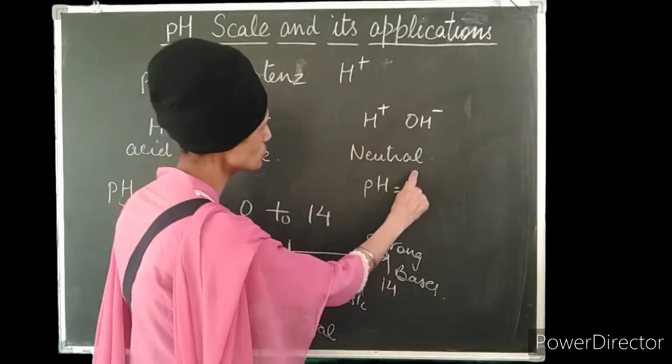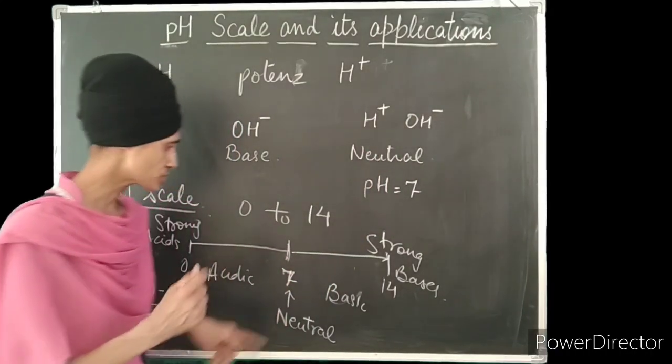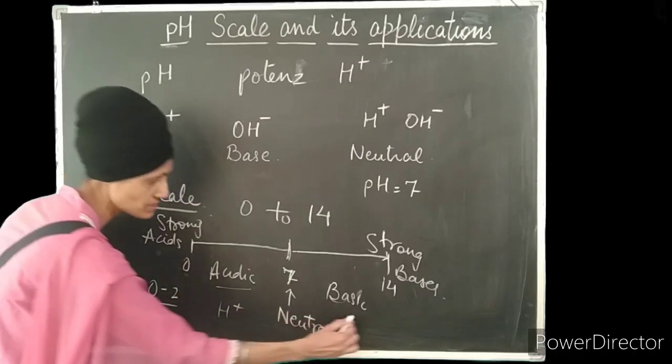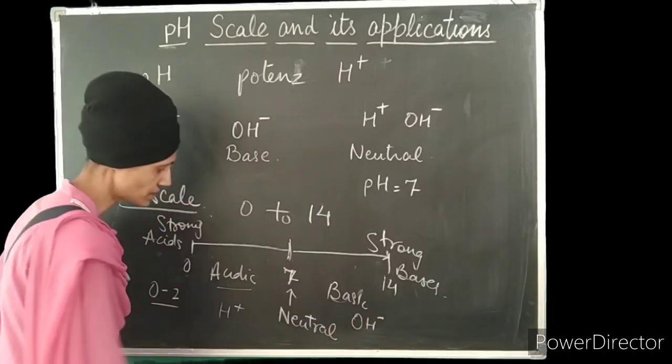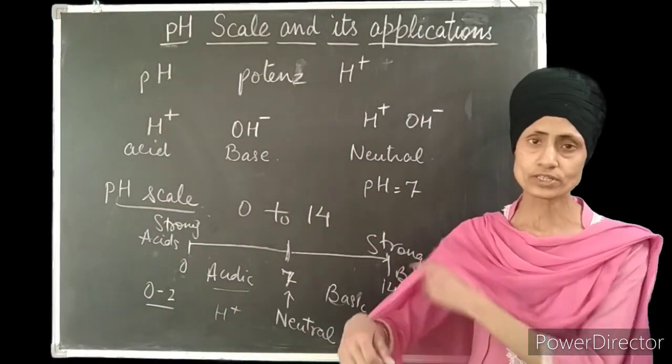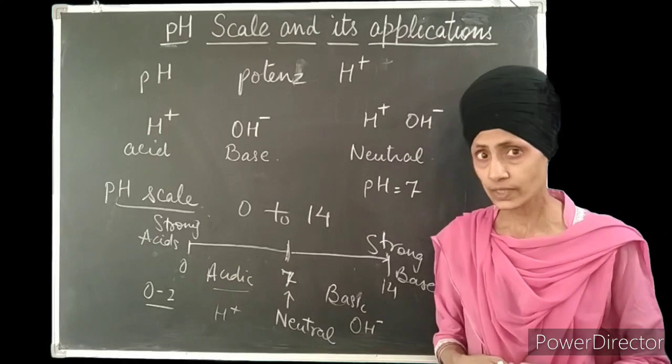I told you that in neutral solutions the number of H+ and OH- ions is equal. Now the question arises, we already know that acids have H+ ions, basic solutions have OH- ions. But do acids also have OH- ions or do bases also have H+ ions? Yes, of course.